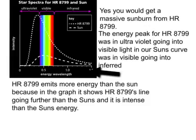The energy peak for HR 8799 was in ultraviolet going into visible light, and our sun's curve was in visible going into infrared light.